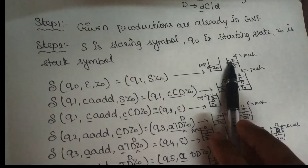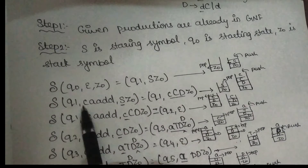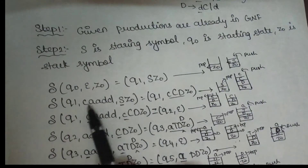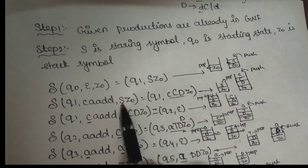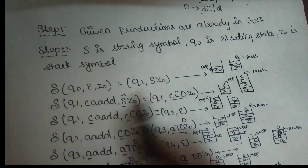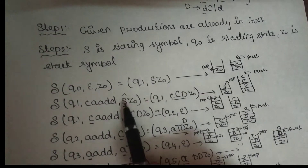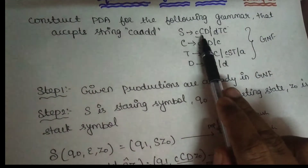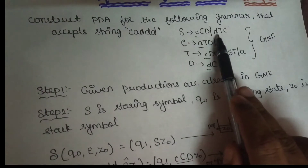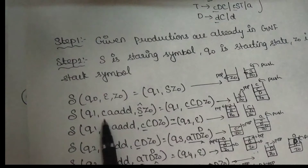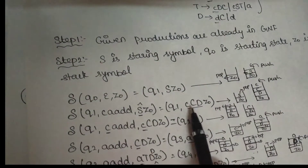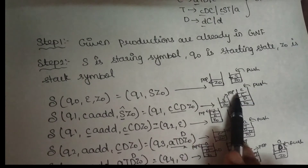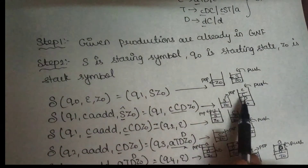In state Q1, what are the input strings and stack elements? In Q1, the top of the stack is Z-naught. What are the variables — the non-terminals? For a non-terminal on the top of the stack, we look at the production rules. S goes to small letter C, capital letter C D. We need to insert: small letter C, capital S non-terminal, small letter C D — we push these values. The top of the stack S is popped, and then small letter C and terminal C D are pushed.